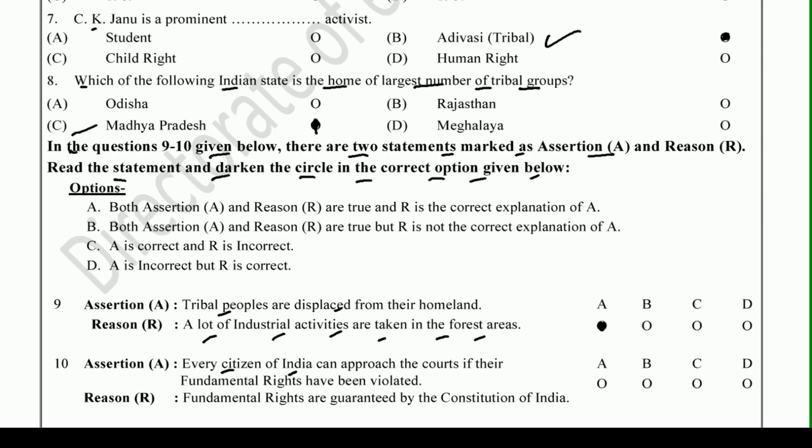Assertion: Every citizen of India can approach the courts if their fundamental rights have been violated. Reason: Fundamental rights are guaranteed by the Constitution of India. The Constitution gives us the guarantee of fundamental rights, and the sixth fundamental right — Right to Constitutional Remedies — allows us to go to court if our fundamental rights are violated. So this is also option A.